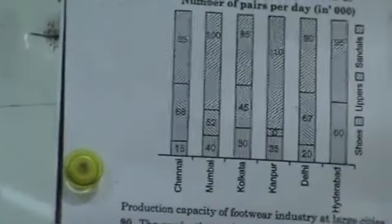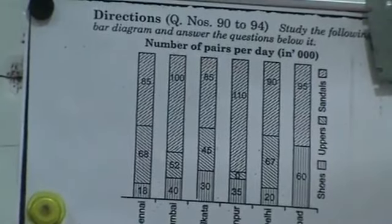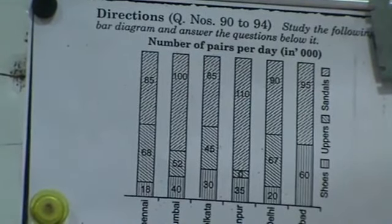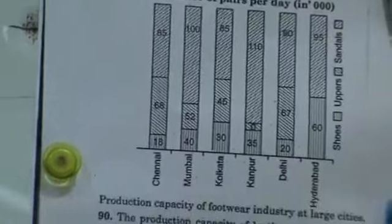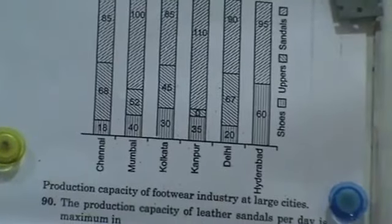Study the following diagram carefully and answer the questions given below. They are saying that production capacity of footwear industry in large cities: shoes, uppers and sandals.